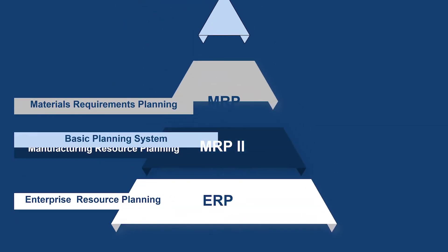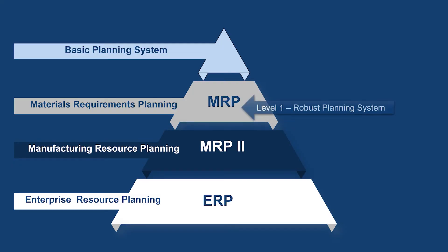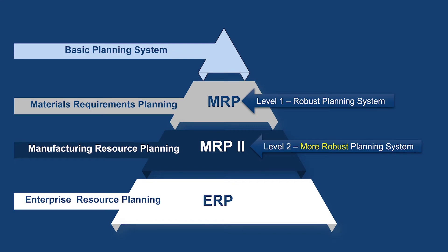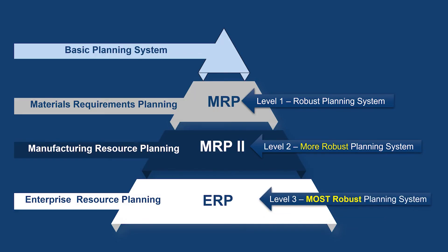Key takeaways: if you're just trying to produce a product, track your material, and receive your material on time, an MRP system will do the job. When you bring in production planning and forecasting, it's time to upgrade from MRP to MRP2. And if you need even more aspects of your organization all in one place — where everyone needs to access the data — you want to graduate to an ERP or enterprise resource planning system.